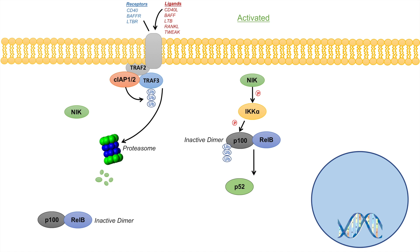Once P100 is degraded in the proteasome, it releases a product known as P52. P52 is able to bind to REL-B in a similar fashion as P100 did. So instead of having a P100-REL-B dimer, we now have a P52-REL-B dimer — and this dimer is considered active. The whole point of the pathway becoming active is to form this active P52-REL-B dimer. When the pathway is active, NIK phosphorylates IKK-alpha, which phosphorylates P100, leading to its ubiquitination and degradation, producing P52, which binds REL-B to form the active dimer.